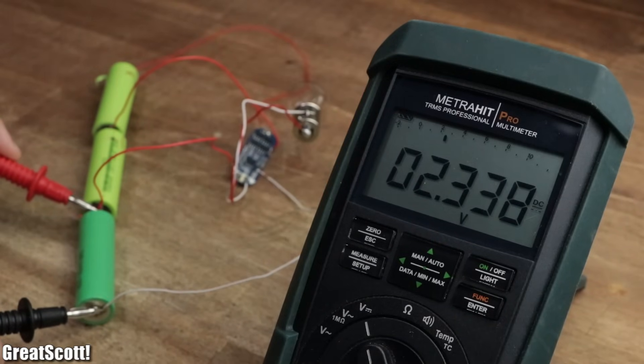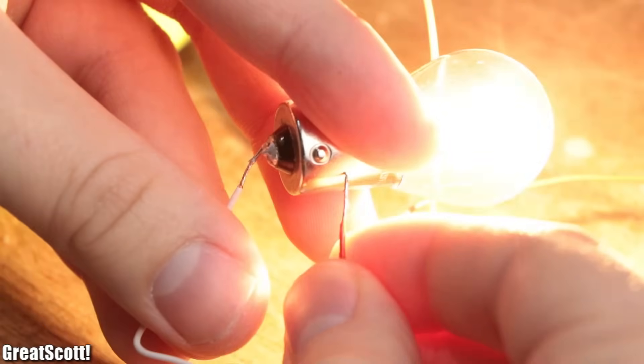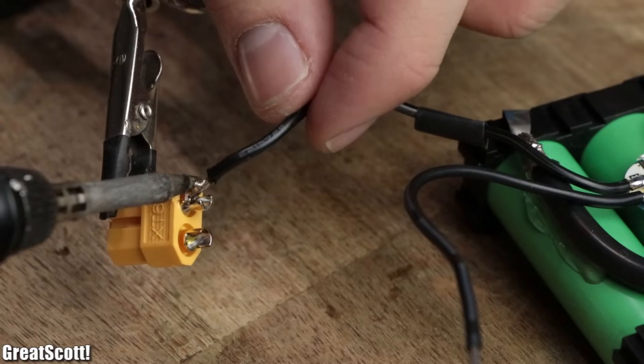But on the other hand, the BMS also cuts the discharge current when one cell reaches a voltage of 2.3 volts to prevent an over-discharge. Also, there's an overcurrent protection of 26 amps and thus obviously a short circuit current protection.